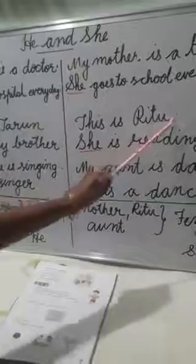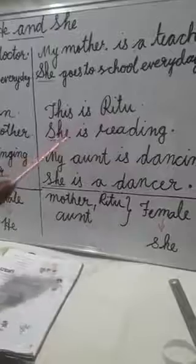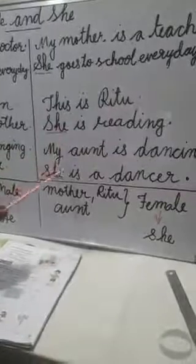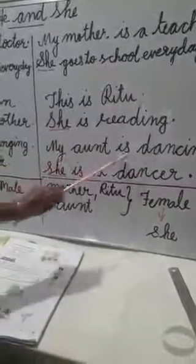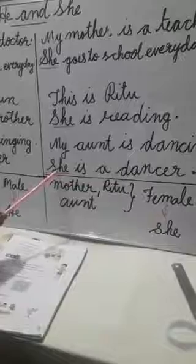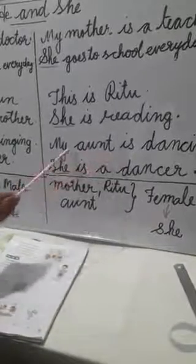Here also, 'she' is used in place of 'Mother'. Mother is a naming word, and 'she' is used in place of that naming word. And 'she' is used in place of the naming word Ritu. Then, 'My aunt is dancing' — 'she' is used in place of Aunt.